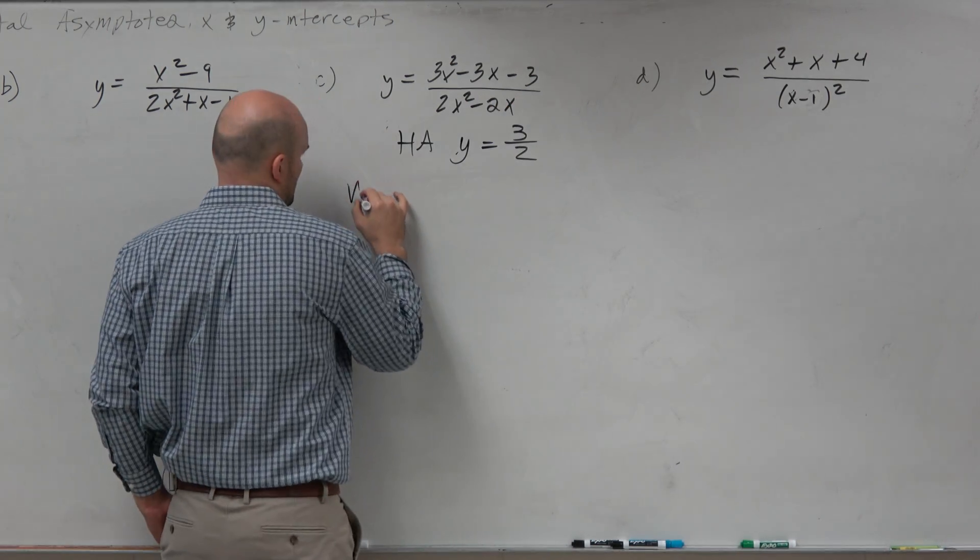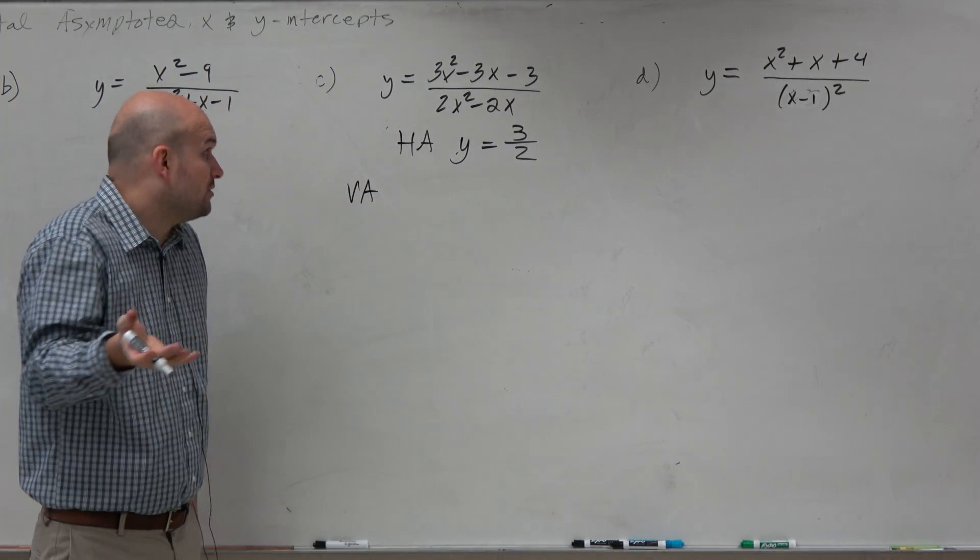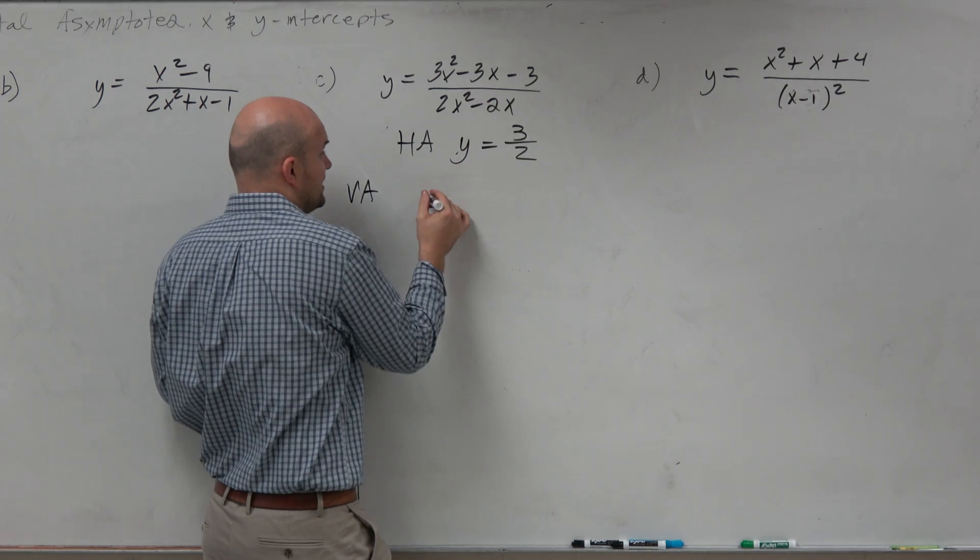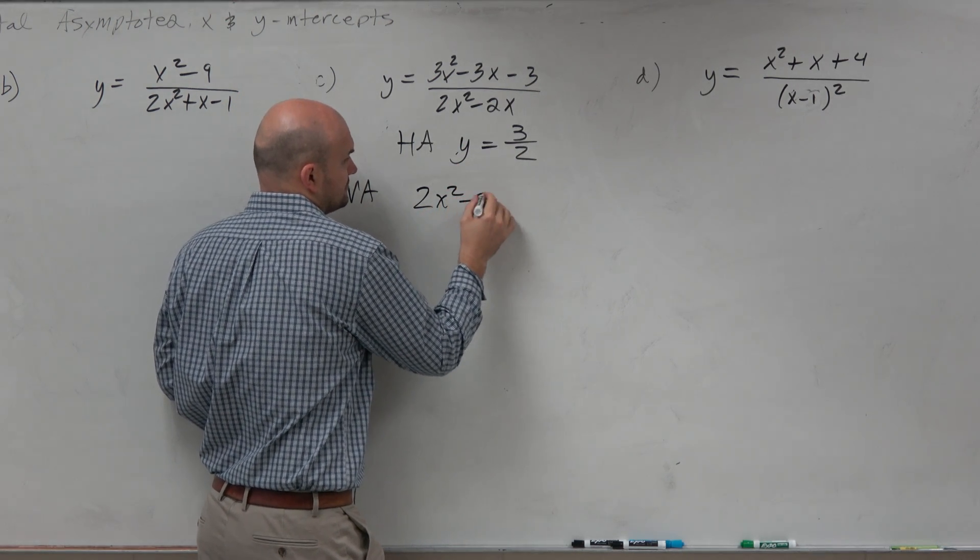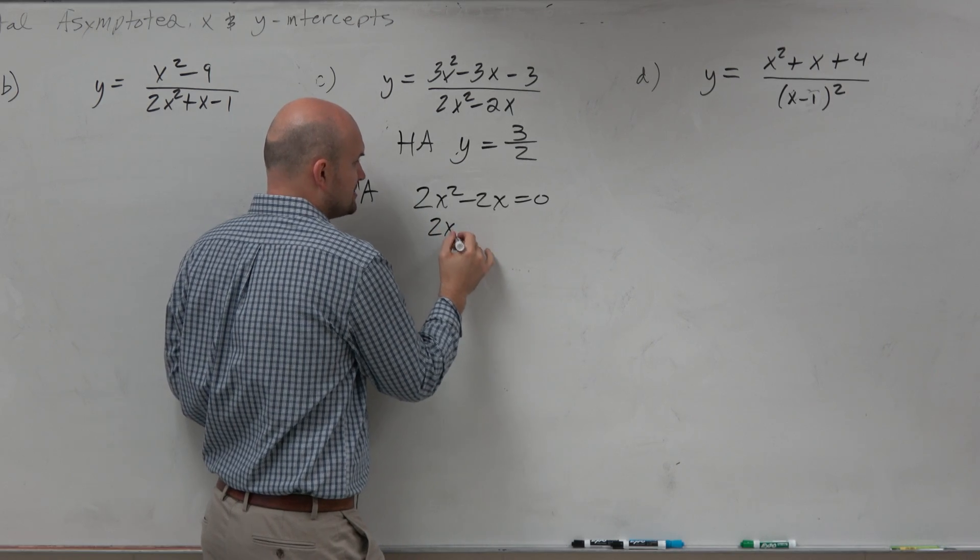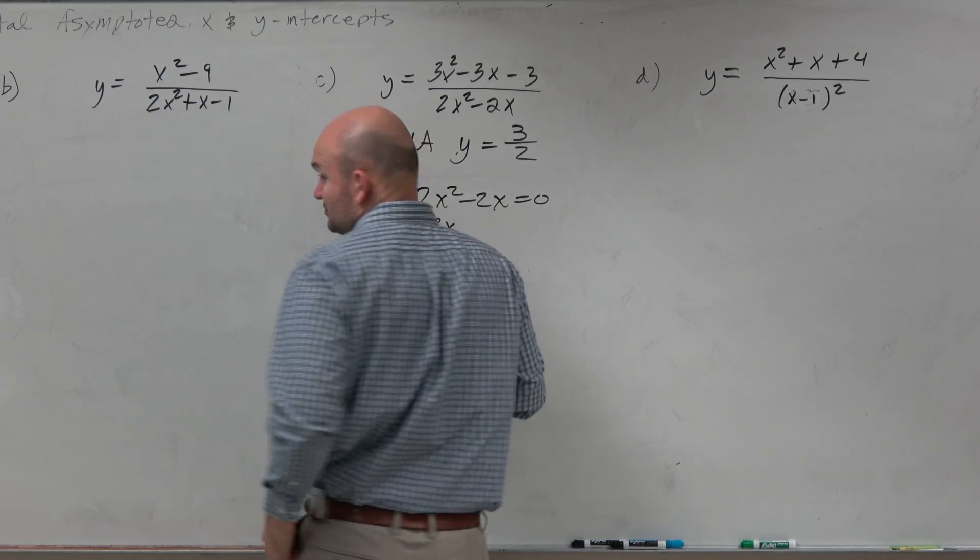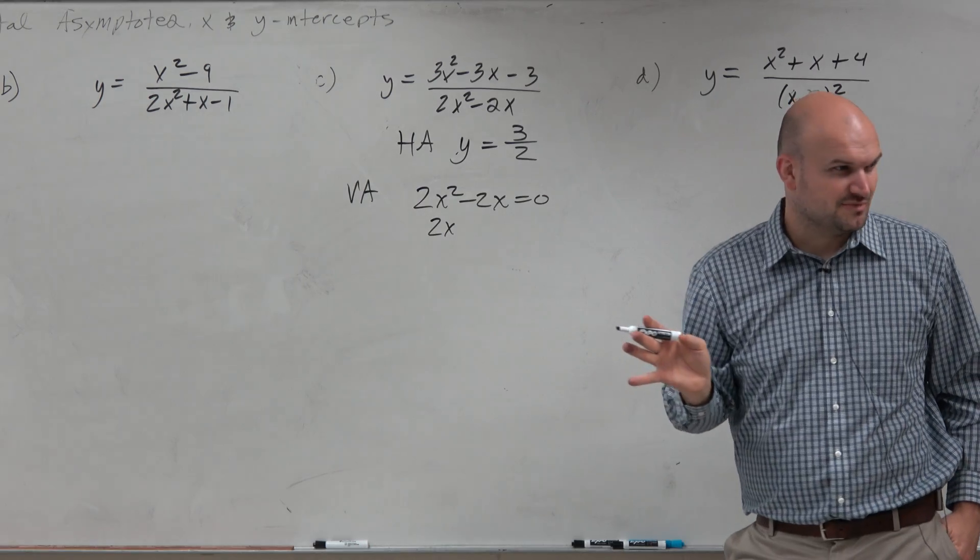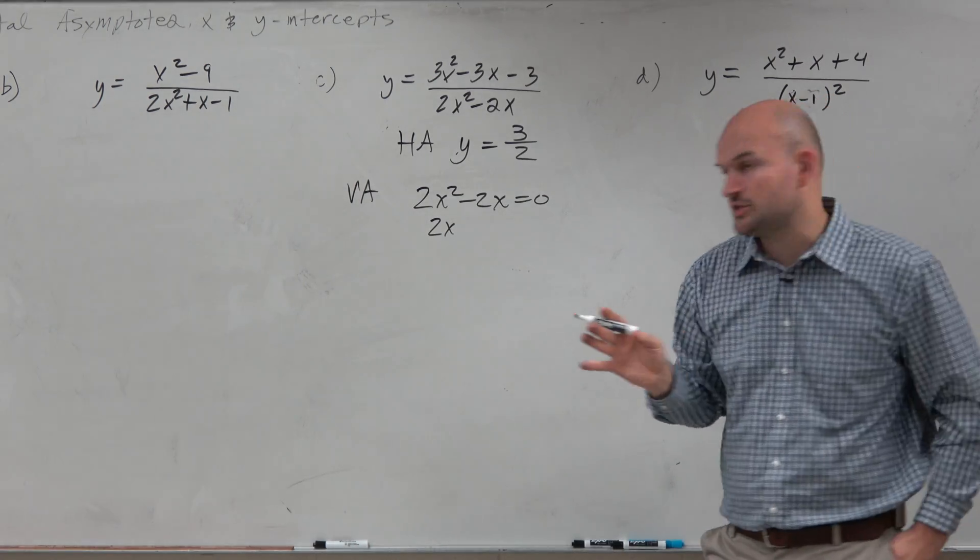Vertical asymptote, we've got to do, again, what we did before. You've got to set the denominator equal to 0. Here I can factor out a 2x. Oh, now, should I double check to make sure I don't have an asymptote here? I should probably factor these, right, just to make sure.